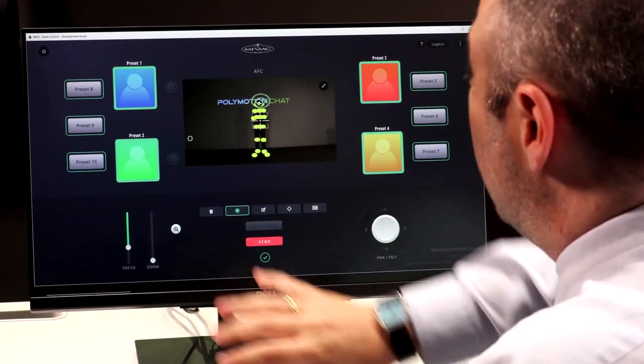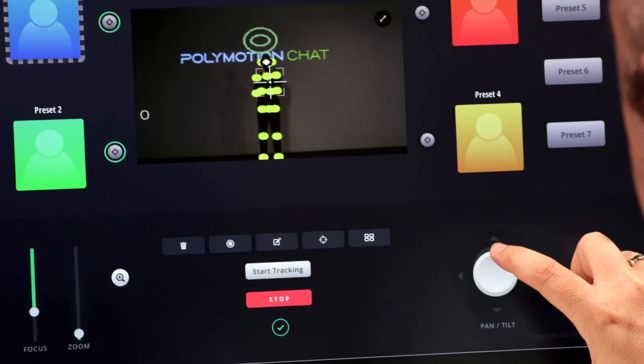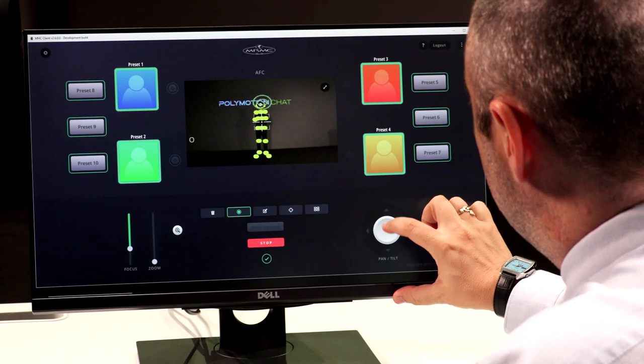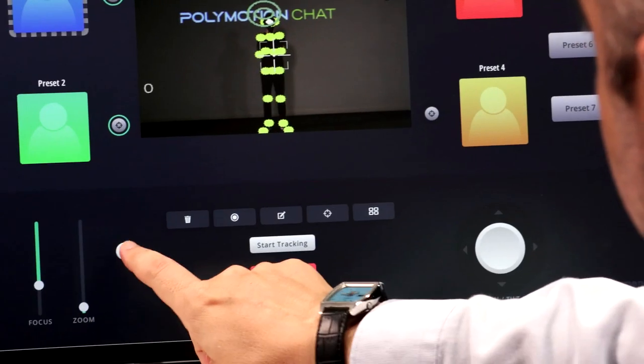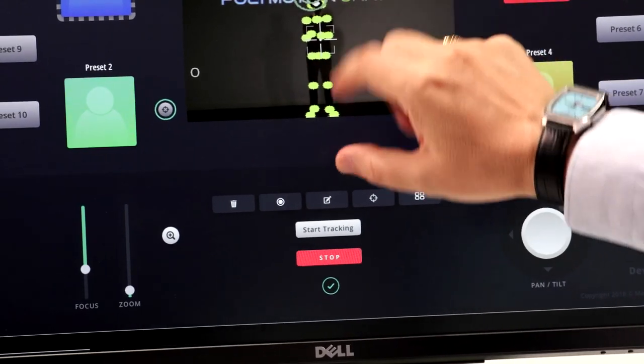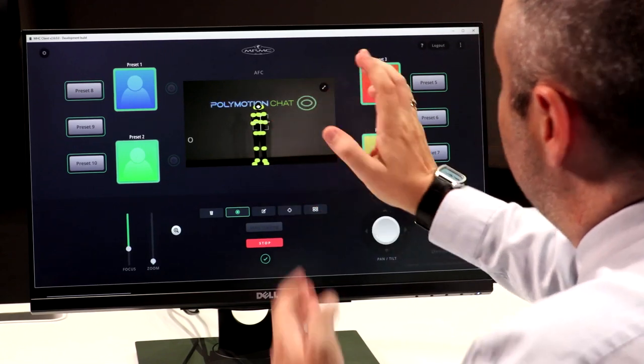In this case, all you need to do is simply arrange the shot you want. So we're doing a top-to-toe shot. I can adjust the zoom, I can adjust the pan and tilt, I can adjust the zoom here as well, and pretty much compose that shot where I want it to be.